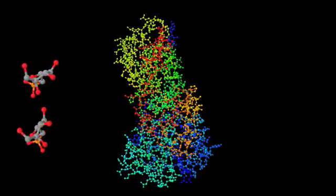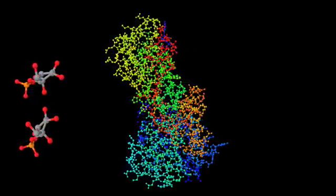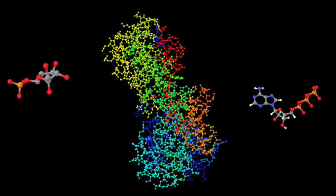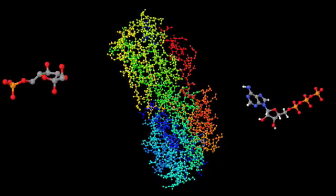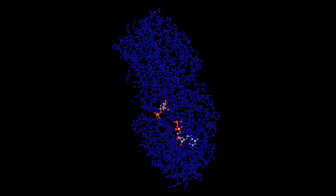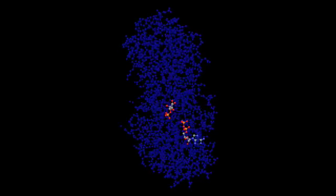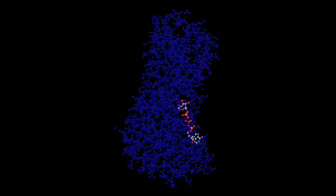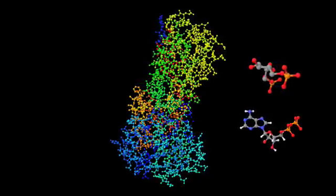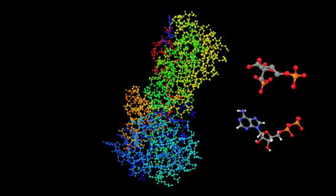This is the step 3 enzyme, phosphofructokinase. It captures the molecule we just made as well as another ATP molecule. Then it transfers a phosphate group from the ATP to the fructose 6-phosphate, producing fructose 1,6-biphosphate and another ADP molecule.